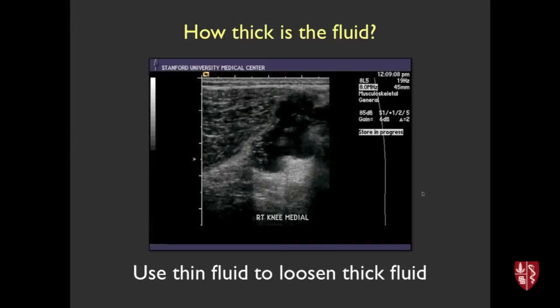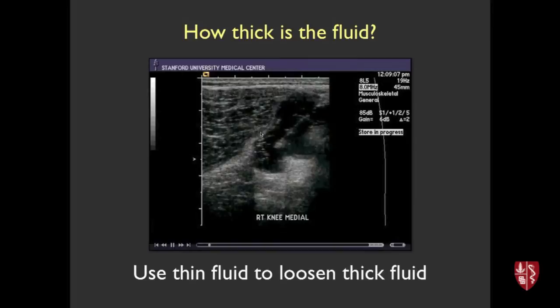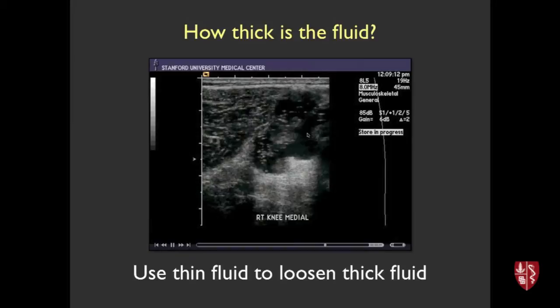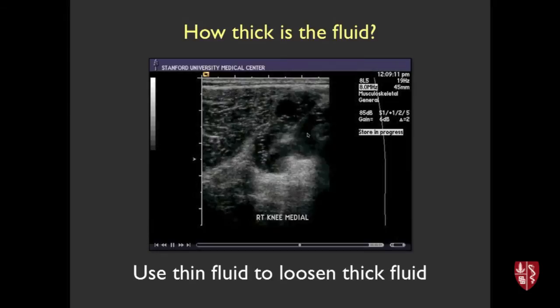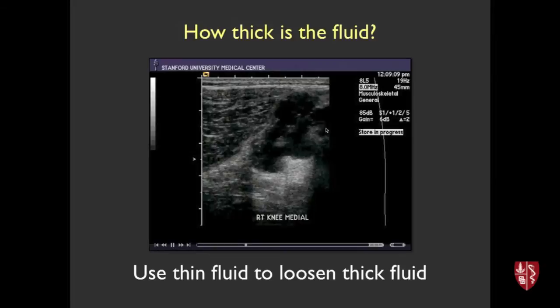The fluid can be fairly thick. Here's a different patient where you can see the lesion, and as we inject thin fluid you can get a sense of how viscous the fluid inside is. When we put a needle in, we may hook up tubing and lavage in and out — kind of rinsing in and out — and eventually that process thins the fluid and allows you to drain it all the way out, helping you avoid going to a larger needle.